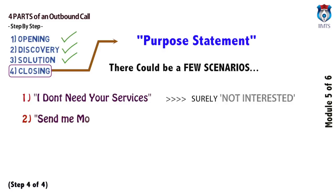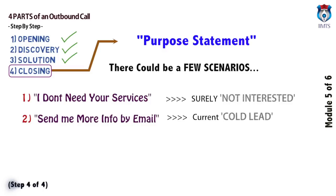Second, I need information by email — wherein the prospect would say please send me all the information by email and I will think about it. This means that at this point he or she can be categorized as a cold lead, which might become a warm lead or a qualified lead if there is a specific need sometime later.